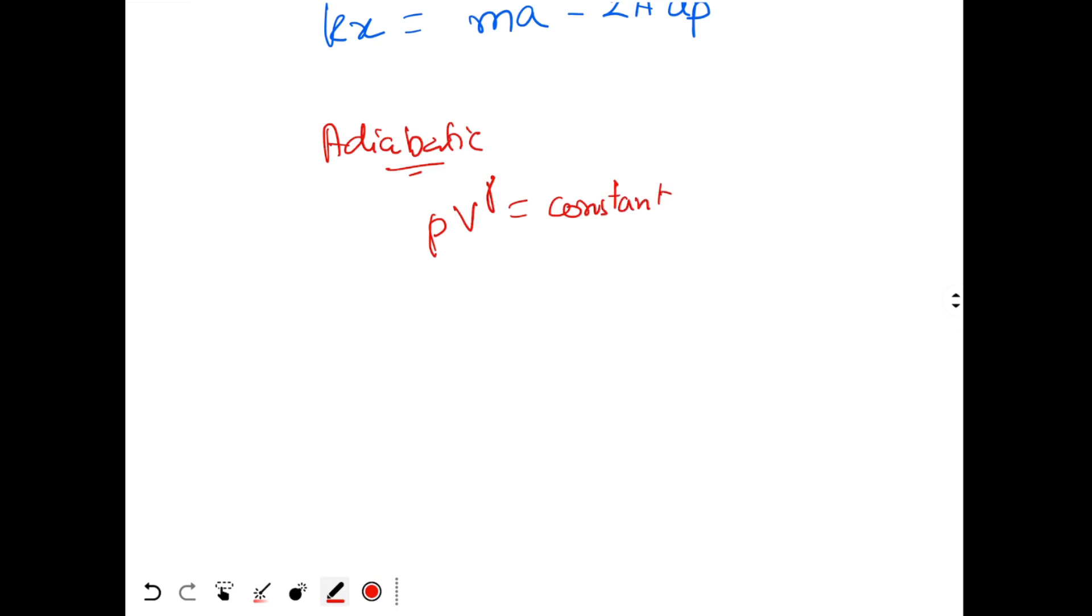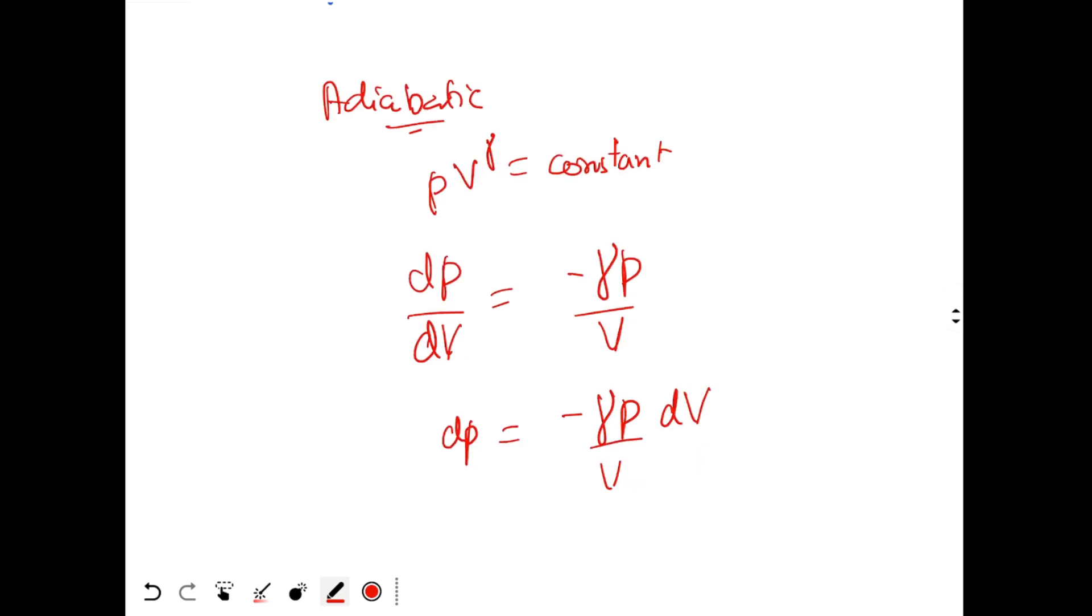Since we have got helium gas, for the helium gas gamma will be 5 by 3. But we will put it later on. If you differentiate this equation, you will get DP by DV will be minus gamma P by V. So DP is equal to minus gamma P by V DV.